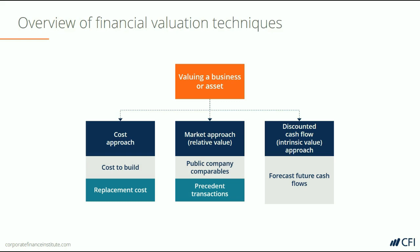That lets us arrive at the net present value of the business. This form of valuation only looks internally at the company, makes assumptions about what the future will look like, and discounts all of those cash flows back to today. In this course, we're going to focus on the three main types of valuation most common in corporate finance: public company comparables, precedent transactions, and discounted cash flow analysis.